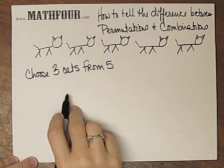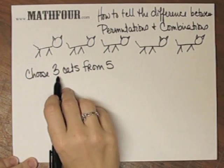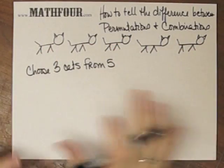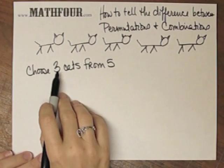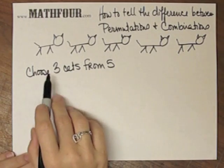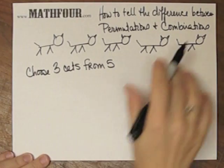So the way it stands, this is a combination because I'm just choosing three cats. I can choose these three or these three or these three or any way that I do it, but I have no information on what these three cats are doing. So because I don't know anything about these three cats, they're just being chosen, it's a combination.